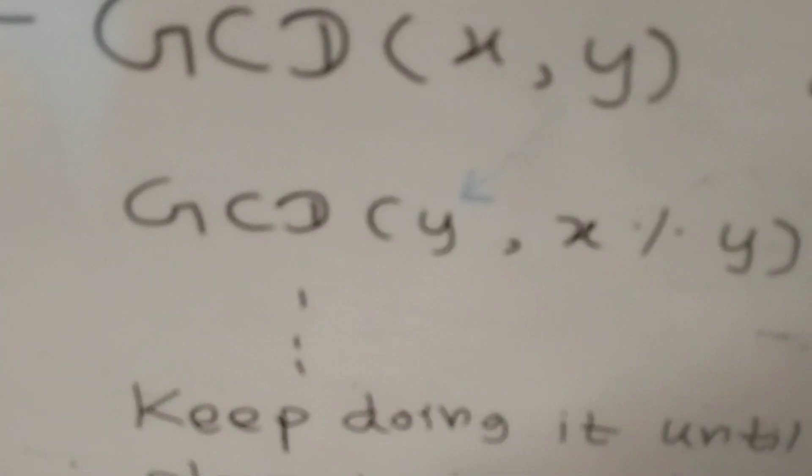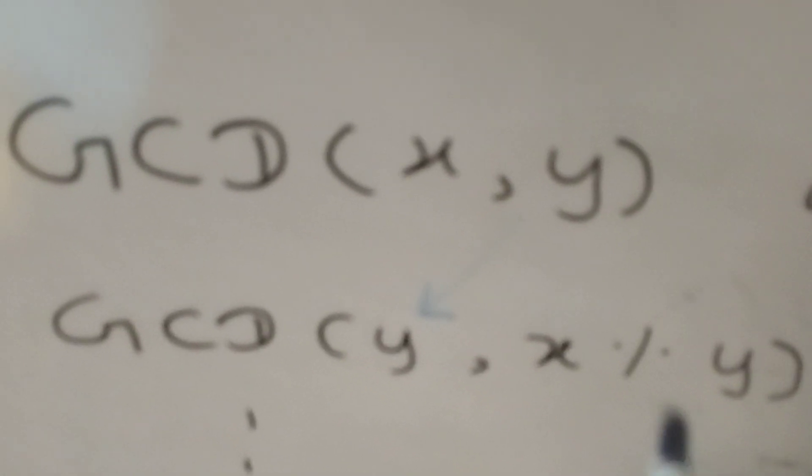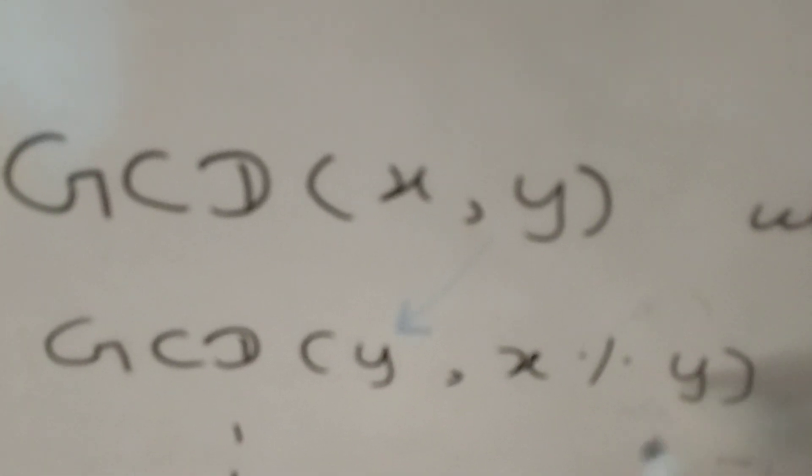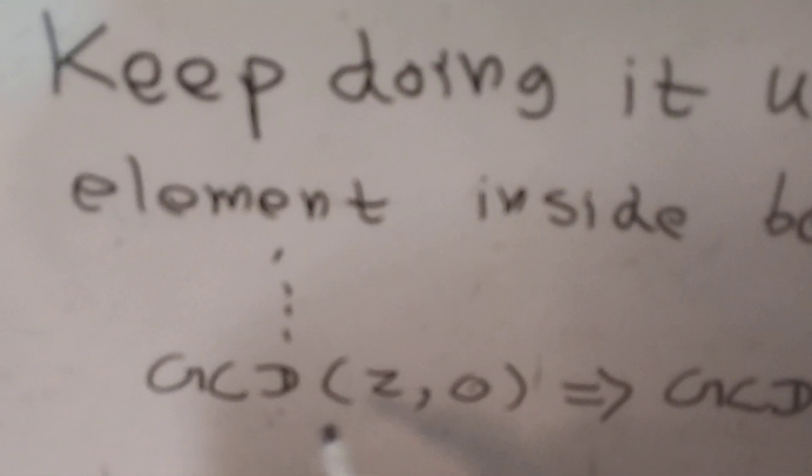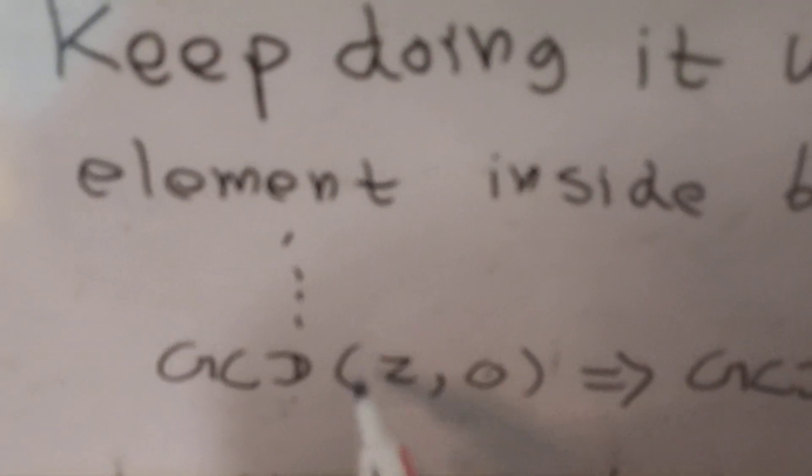You keep doing this iterative step, reducing the numbers inside the GCD each time while not changing its value. The terminating condition is when one of the numbers inside becomes zero. For example, when it reaches GCD(10, 0) or GCD(0, 10), you stop. The answer is the non-zero number — so GCD(x, y) = z.